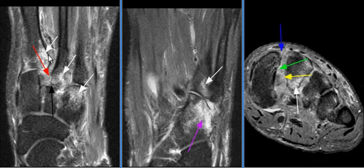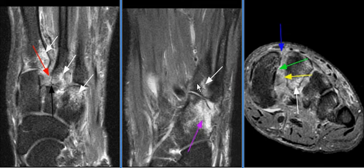There is lateral offset of the first, second, and third metatarsal bone bases with respect to the medial, intermediate, and lateral cuneiform bones, respectively.